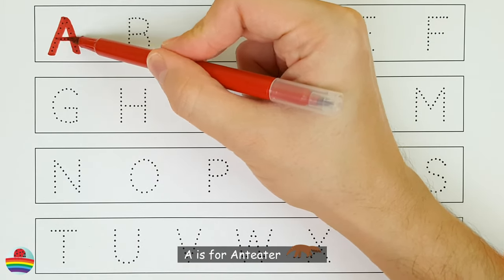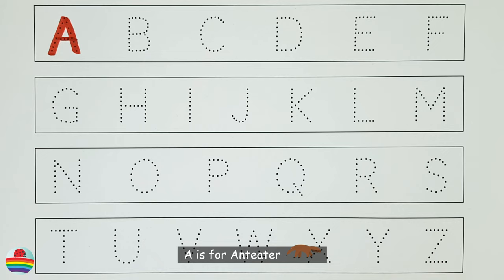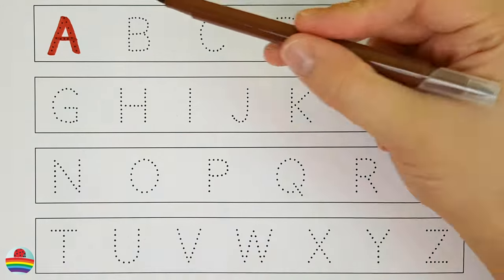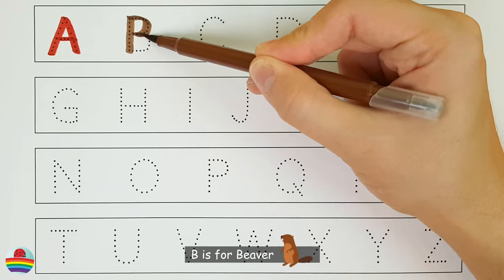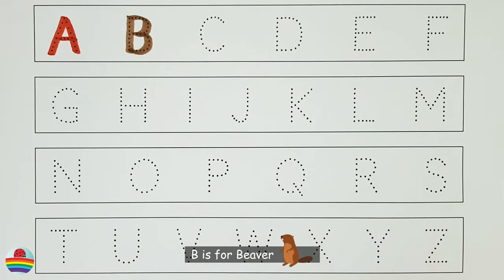A. A is for anteater. B. B is for beaver.